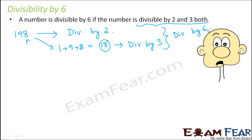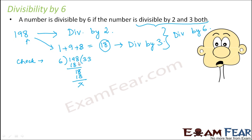If a number is divisible by 2 but not by 3, it will not be divisible by 6. Similarly, if it is divisible by 3 but not by 2, it will also not be divisible by 6. We can verify with actual division: dividing 198 by 6, we get exactly 33, so 198 is exactly divisible by 6.